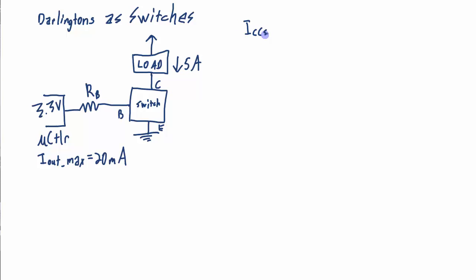So my IC sat that I require, or the saturation current, I want to run it in saturation so my IC saturation current is equal to 5 amps. In order for this circuit to act as a good switch, I require that my base current be more than 5 times IC sat over beta.